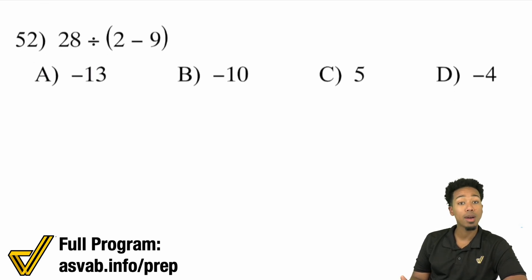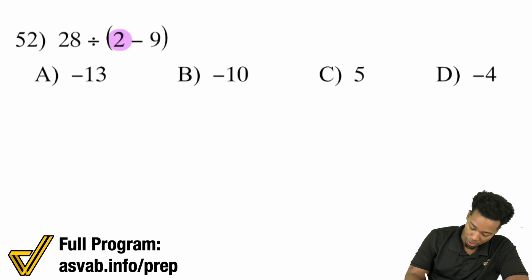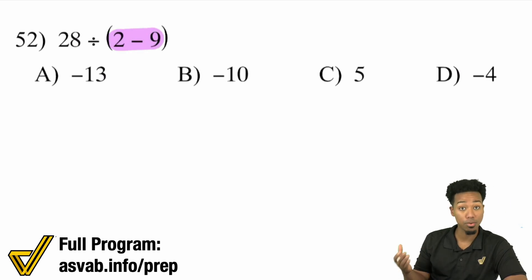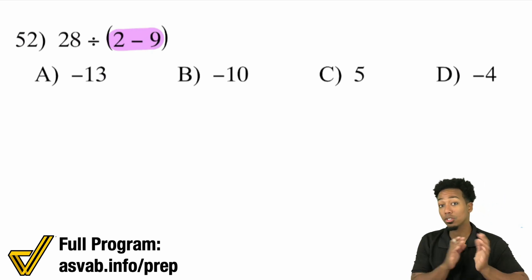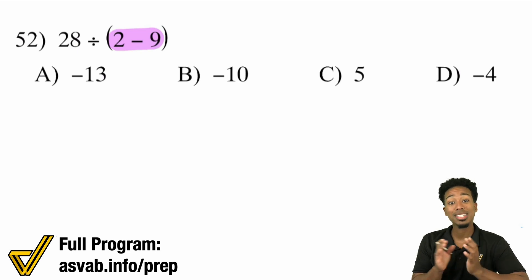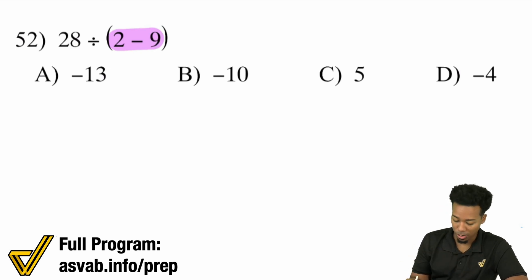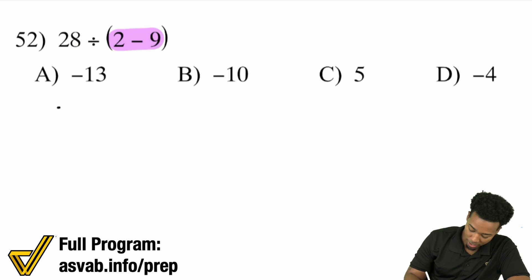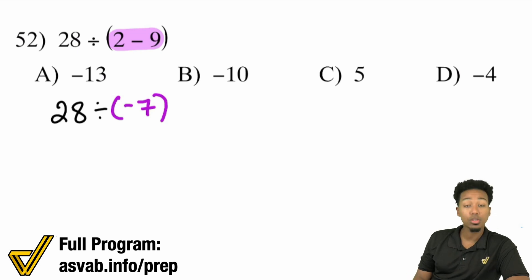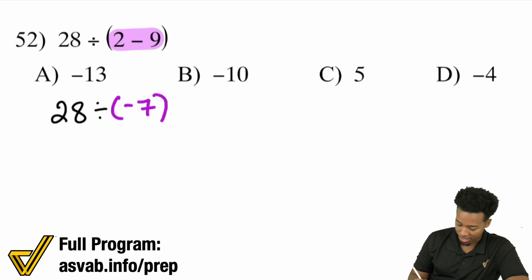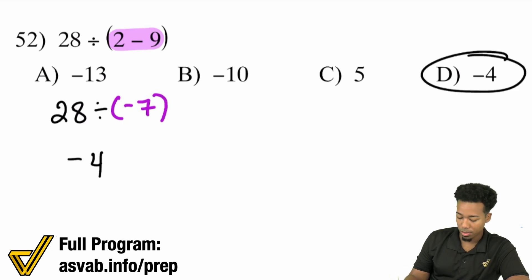We have 28 divided by (2 minus 9). The first thing we need to do is tackle the 2 minus 9 because it's in the parentheses. So 2 minus 9 is going to be negative 7 — remember, 9 minus 2 is 7, but 2 minus 9 is negative 7 because you're subtracting more than you have. The bigger number is the 9, so you keep the sign of the bigger number. So here we have 28 divided by negative 7. A positive divided by a negative will be negative, and 28 divided by 7 is 4 — so negative 4.